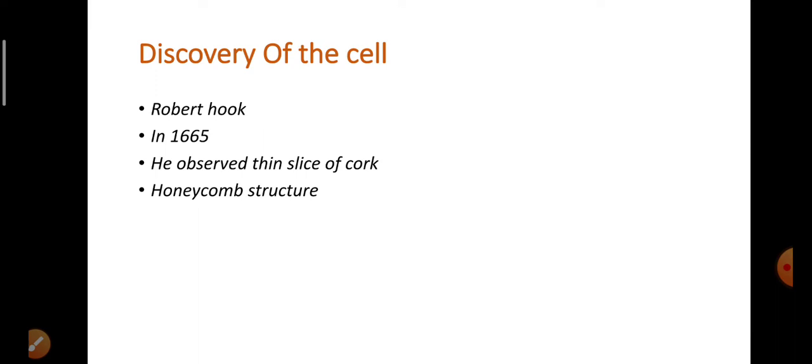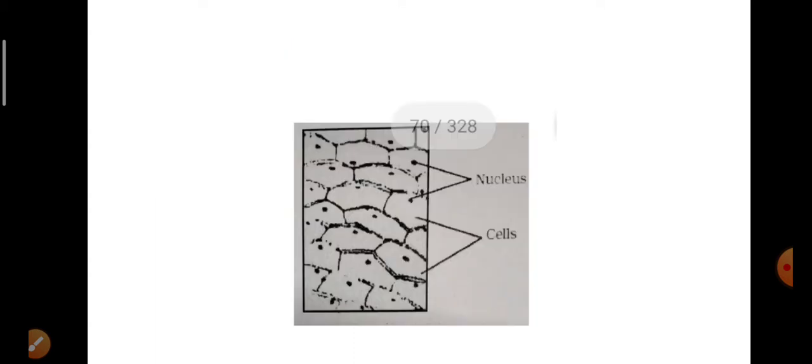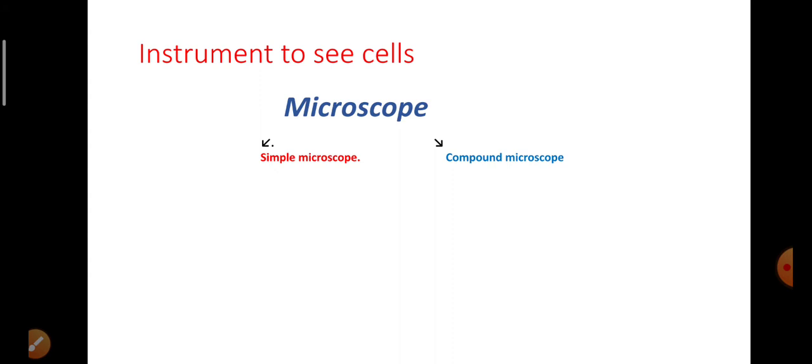Next, who discovered the cell and when? The answer is Robert Hooke. Robert Hooke, an Englishman, discovered the cell in 1665. He discovered a thin slice of cork under a microscope. From his observation, he found that cork is made up of box-like compartments forming a honeycomb structure. He called these compartments cells.